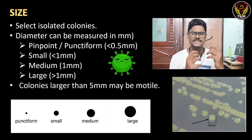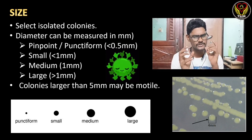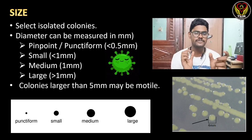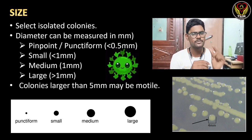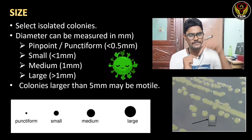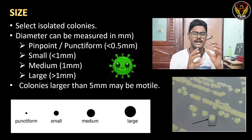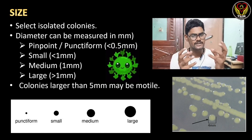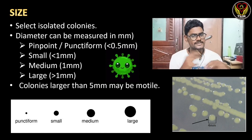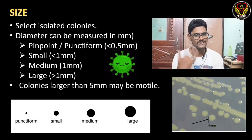The first parameter is size. To measure the size of a colony we have to select an isolated colony — it should not be merged with other colonies. We measure the diameter of the colony in millimeters. If the diameter is less than 0.5 mm, it is called a pinpoint colony — it will be like a dot. Small colonies are less than 1 mm, medium colonies are equal to 1 mm, and large colonies are greater than 1 mm. If colonies are larger than 5 mm, there is a probability they might be motile.